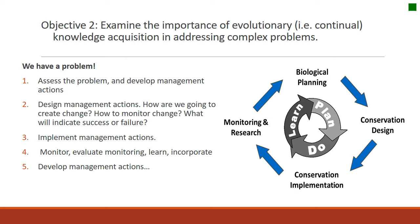This is the evolutionary part when we start talking about knowledge acquisition. What we initially learn, we plan for; we then implement it, monitor and evaluate it. We learn from what we had initially planned, and based on the outcomes, we can alter our plans in the future. Because our rangelands are constantly changing both spatially and temporally, our solutions also need to change spatially and temporally. Without some sort of evolutionary knowledge acquisition, adaptive management solutions tend to stay constant while our problems evolve and increase in complexity.